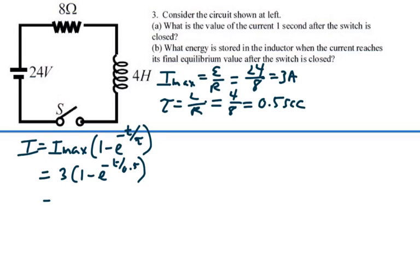Or in this case, for this circuit, this would be equal to 3 times 1 minus e to the negative 2 times t. That is our current for all time.